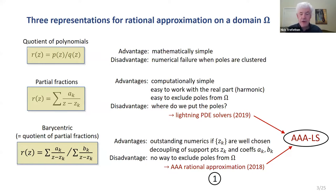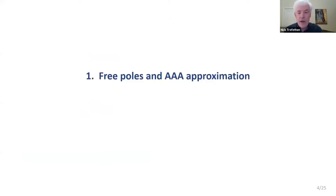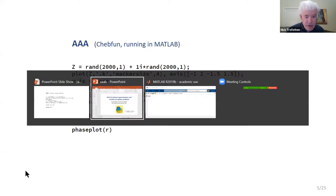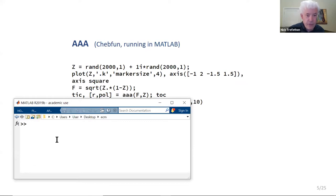So here's my outline: first, talk about AAA; then talk about lightning; and then the new material, AAA least squares. Let me begin with the barycentric rational formulation, where the poles are free — a virtue from many points of view. Let me start with a demo in MATLAB, which I do in most talks.